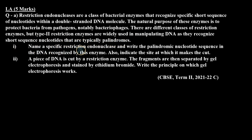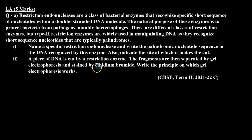First part: Name a specific restriction endonuclease and write the palindromic nucleotide sequence in the DNA recognized by this enzyme, also indicating the site at which it makes the cut. Second part: A piece of DNA is cut by a restriction enzyme. The fragments are then separated by gel electrophoresis and stained by ethidium bromide. Write the principle on which gel electrophoresis works.